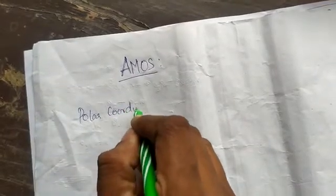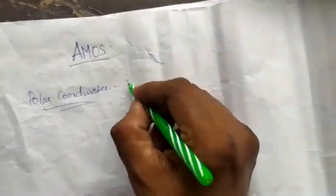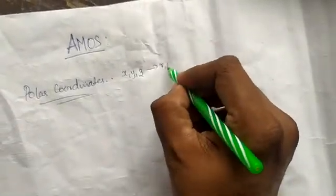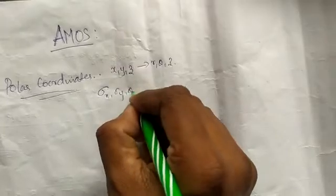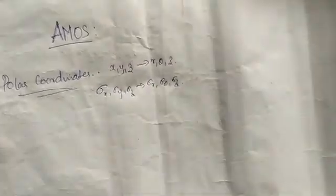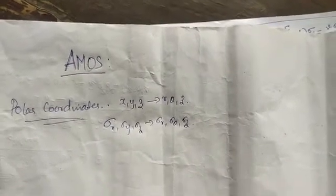Welcome, good afternoon or good evening. We have been covering polar coordinates for many days. In polar coordinates, instead of x, y, z axes, we introduce r, theta, and z axes. Similarly, instead of sigma_x, sigma_y, sigma_z, we will have sigma_r, sigma_theta, and sigma_z. This is the initial framework we will work with.